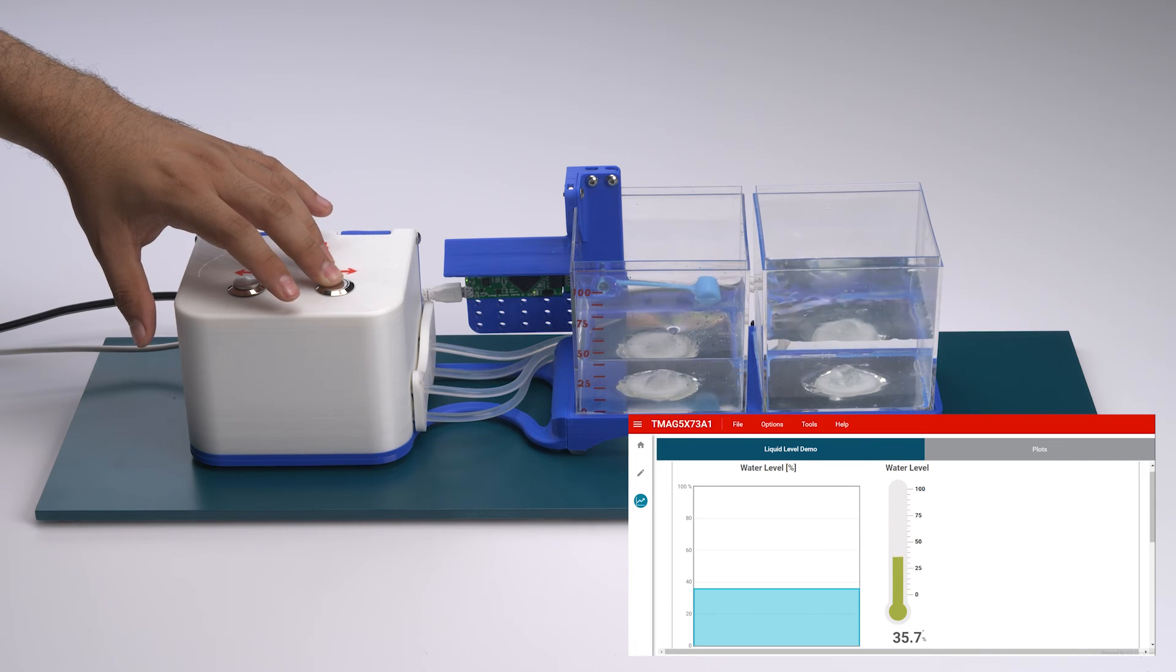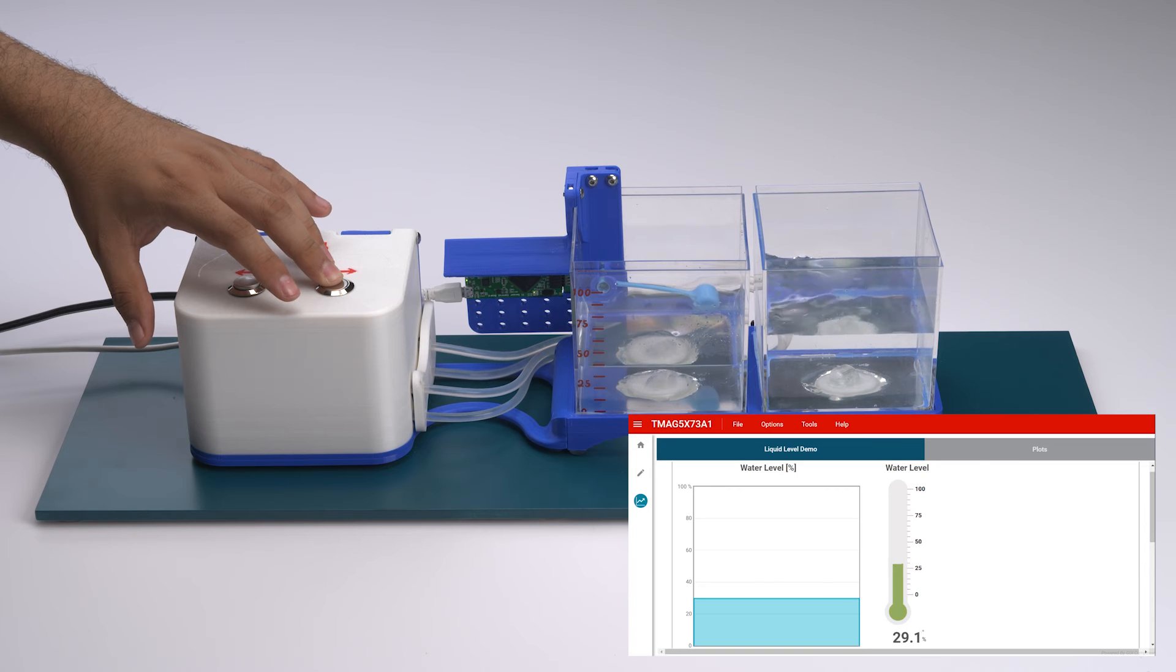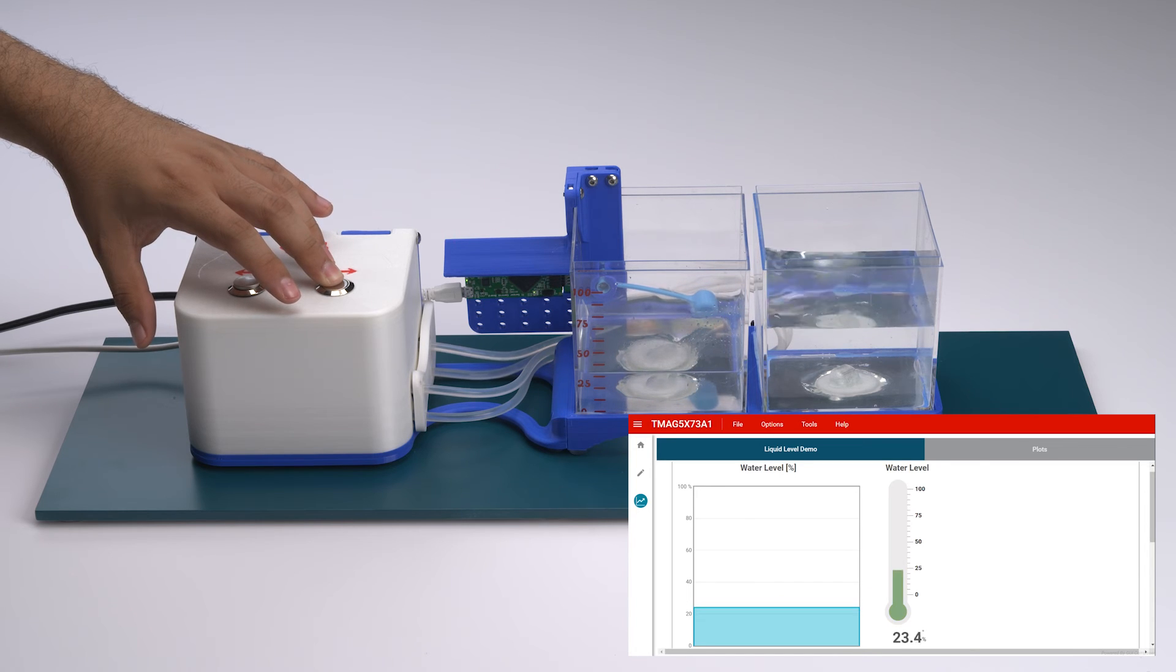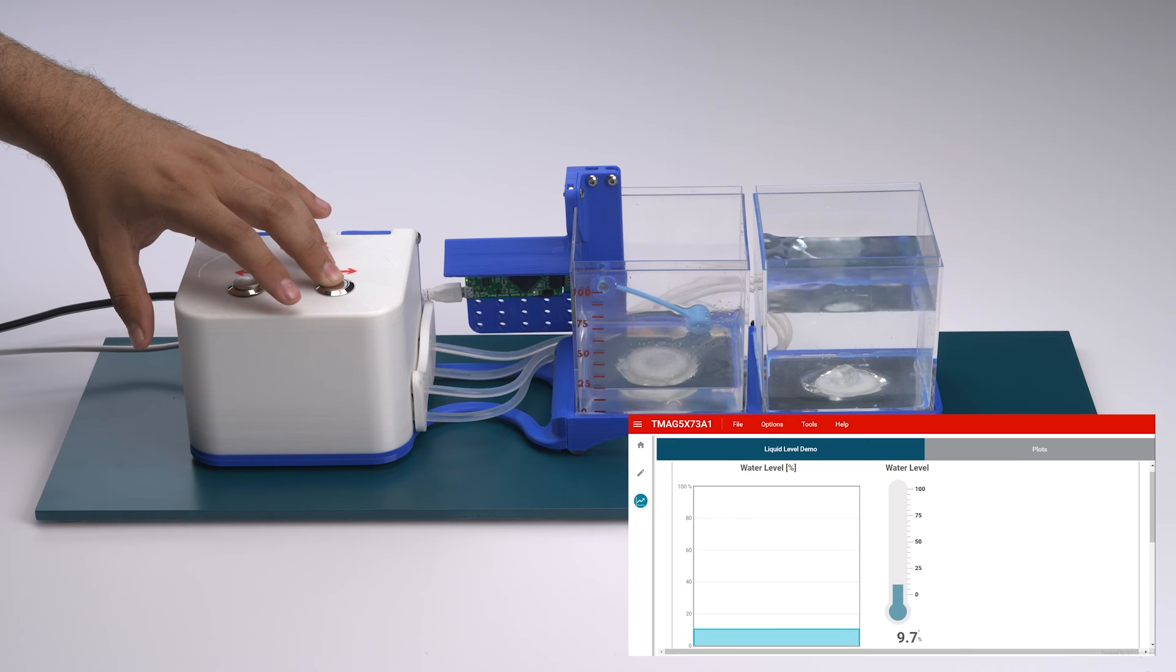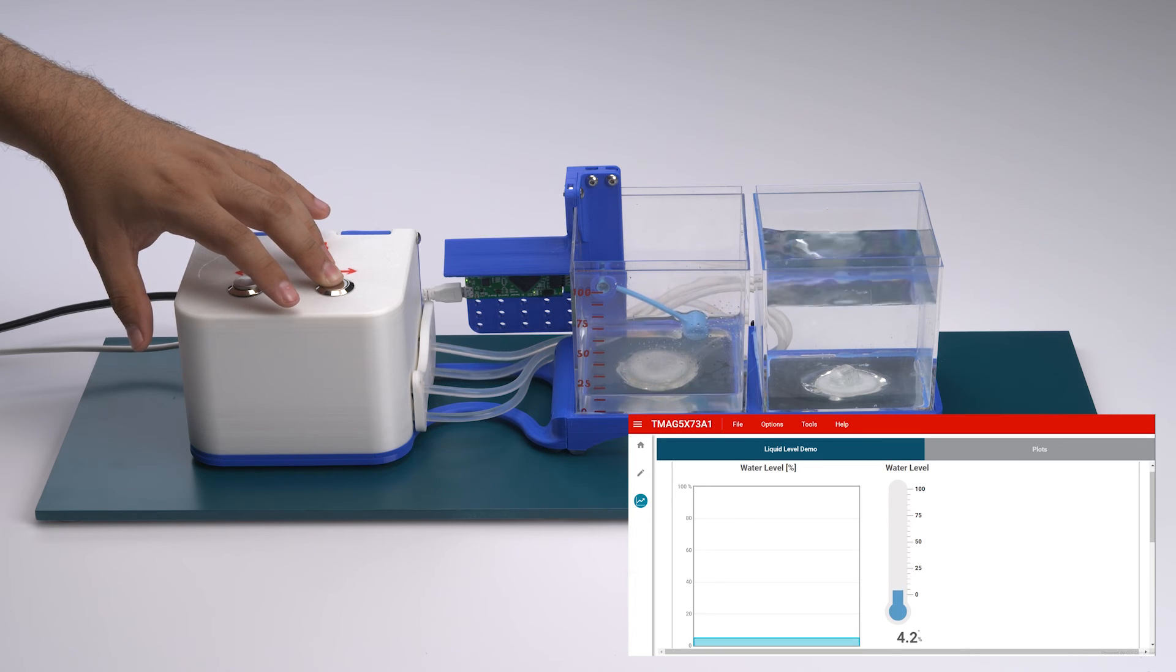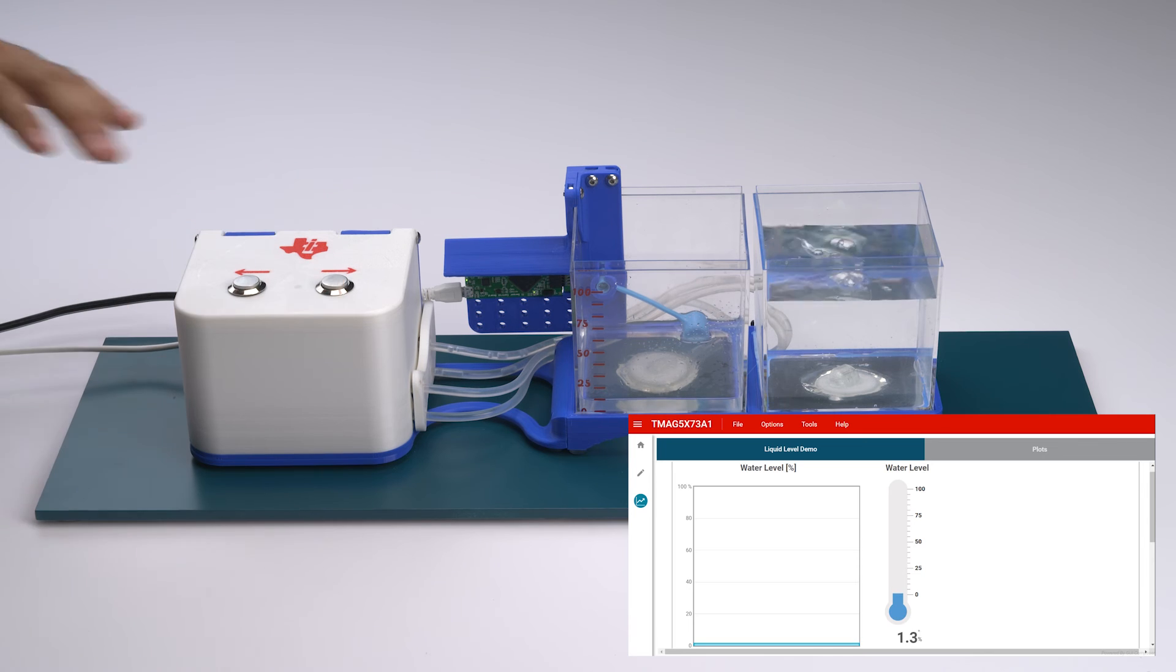A GUI was created for the TMAG5273 liquid level demo. It can be found by going to dev.ti.com and searching TMAG5x73 liquid level demo. The GUI is used to digitally display the level of the liquid using the graph and percentage images on the screen.